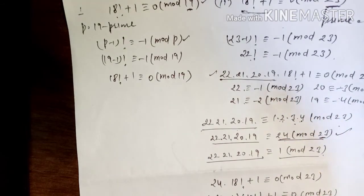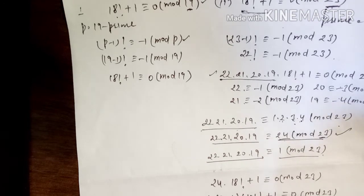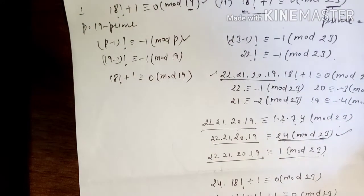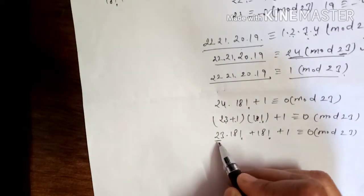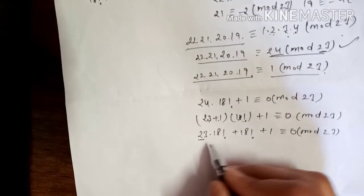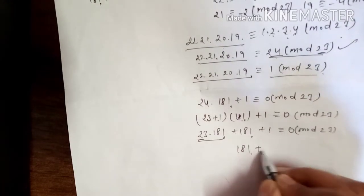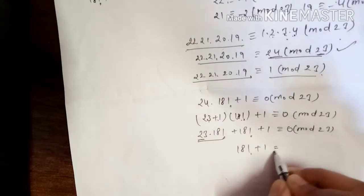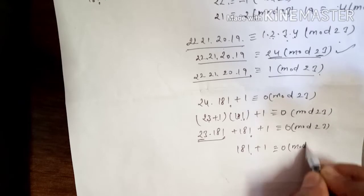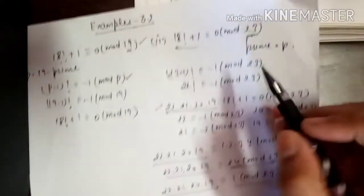Multiplying out: 23 × 18! + 18! + 1 ≡ 0 (mod 23). Now 23 × 18! is congruent to 0 mod 23 since 23 divides it, so that portion becomes 0. Therefore 18! + 1 ≡ 0 (mod 23), which is exactly what we had to prove.